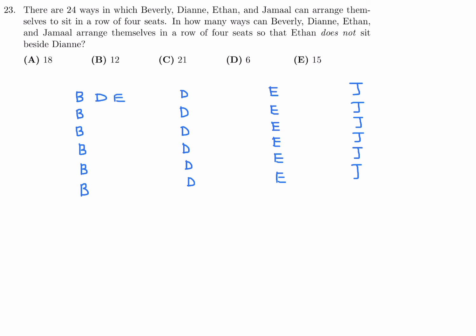So I'll just do the first one. B, D, E, J. We can also have B, D, J, E. And then E can be beside B, and that becomes B, E, D, J. Or B, E, J, D. And J can be beside B, and that would give me B, J, D, E. Or B, J, E, D.